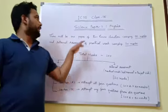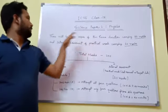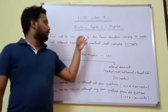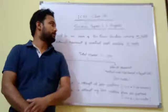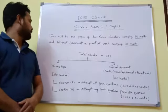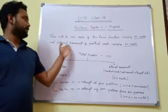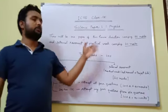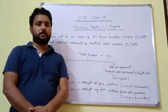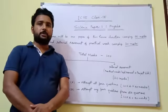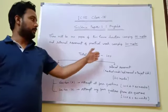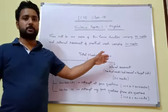In physics, there will be one paper of 2 hours duration carrying 80 marks, and internal assessment of practical works carries 20 marks. This means total marks will be 100 marks.